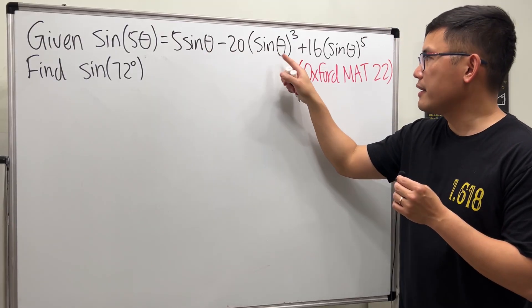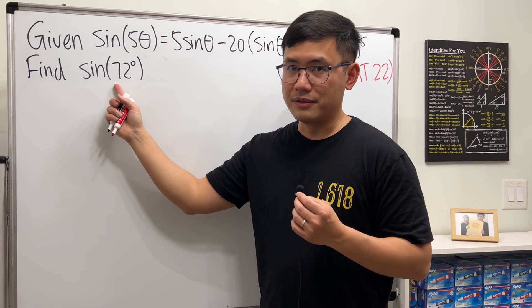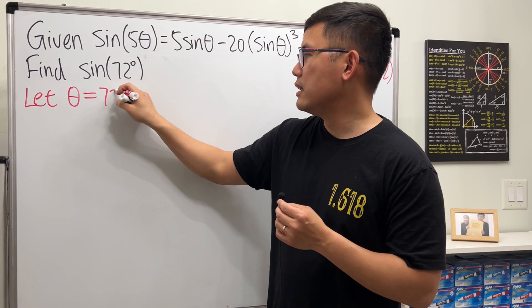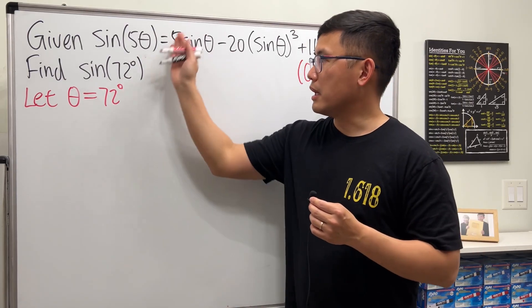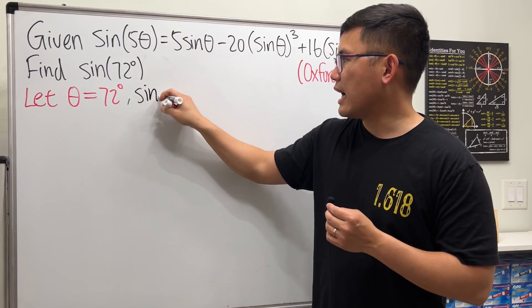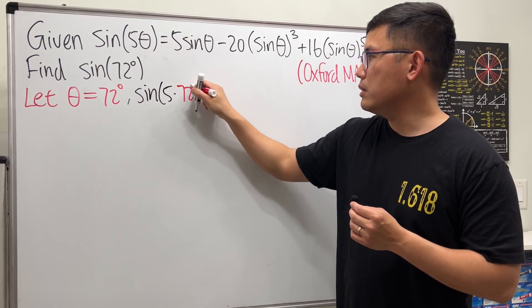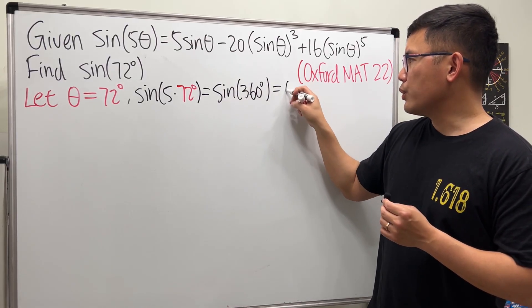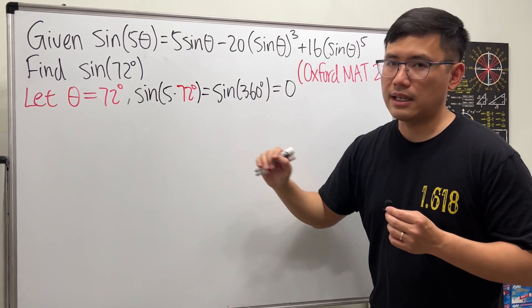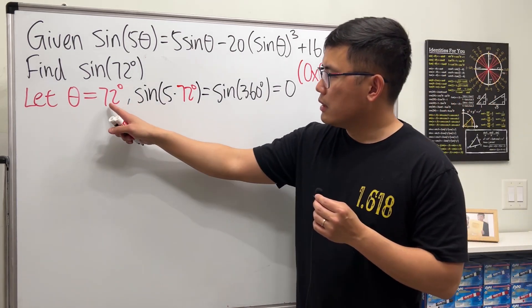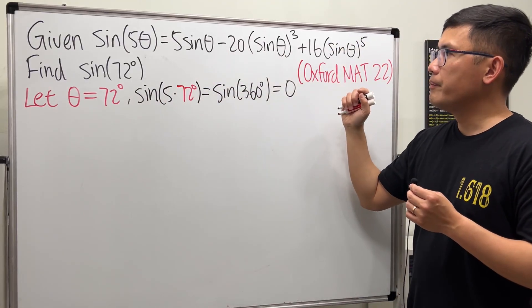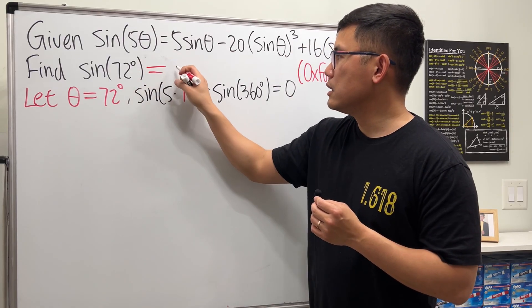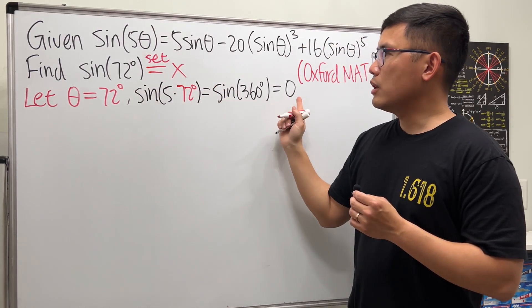Notice here we have sine θ, sine θ, sine θ, and we want sine of 72 degrees. So a natural way is to state θ equals 72 to begin with. Plug in on the left-hand side, we see that we get sine of 5 times 72, and that will give us sine of 360 degrees, and that is equal to zero because 360 is on the x-axis.